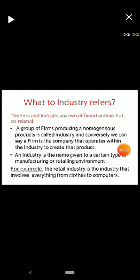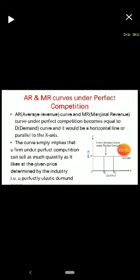Now, the average revenue and marginal revenue curves under perfect competition become equal to the demand curve, and it would be a horizontal line parallel to the x-axis. In perfect competition, the price of the good is always the same regardless of how much quantity the firm is producing, as it is given by the industry.